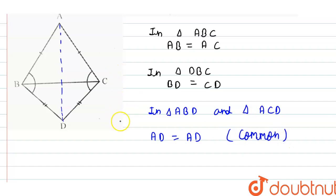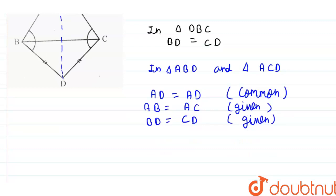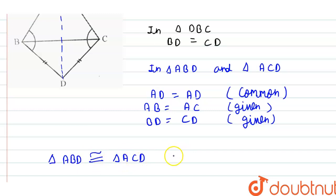This is common in both triangles. And AB is equal to AC — it is given in the question, this is given. And BD is equal to CD — this is also given in the question. So we can say that triangle ABD is congruent to triangle ACD.